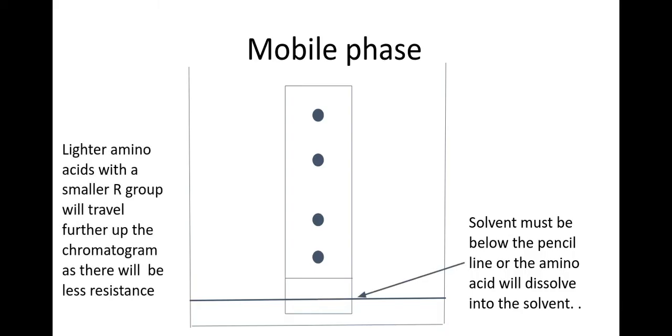Now how this works is that the lighter amino acids will travel further up the chromatogram and this is because they have a small R group and there'll be less resistance between that amino acid and the chromatogram, that silica gel that is moving through. So up here we'd have the lighter amino acids and down here we'd have the heavier amino acids with the larger R groups.